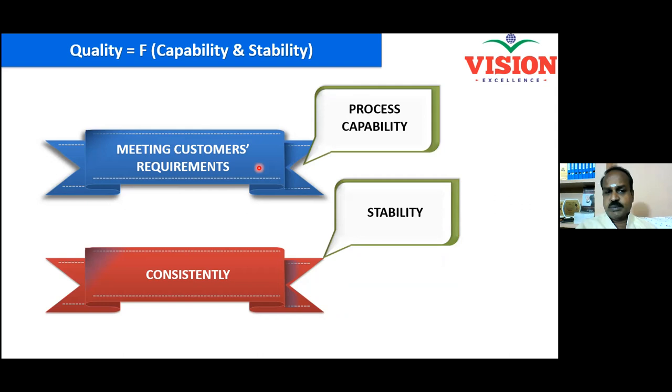Which is more important - capability or stability? I will say stability is very important. The preference should be achieving stability. Once stability is achieved, capability can definitely be improved. Every output you produce should have the desired quality. That is called statistical control, which you need to achieve.